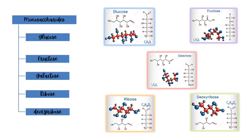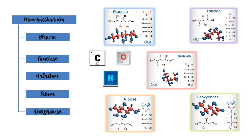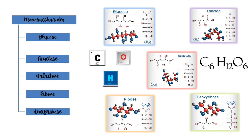Let us focus on monosaccharides — a single sugar molecule. Monosaccharides are made up of five components: glucose, fructose, galactose, ribose, and deoxyribose. Common among all monosaccharides is that their chemical composition is made up of carbon, hydrogen, and oxygen, and they are represented by the empirical formula C6H12O6.